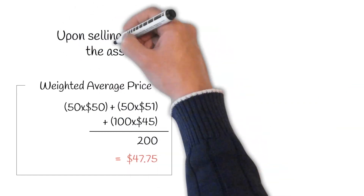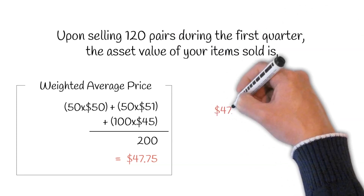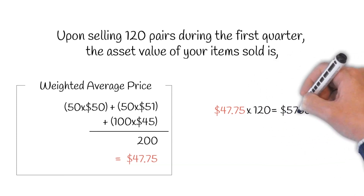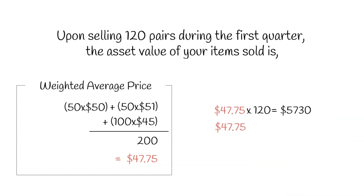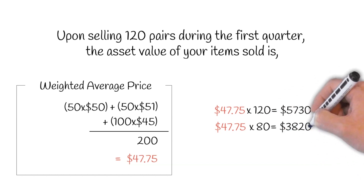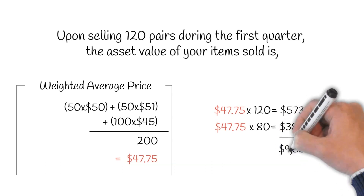Upon selling 120 pairs during the first quarter, the asset value of your items sold is $47.75 times 120, which equals $5,730. The value of your remaining inventory of 80 pairs times $47.75 is $3,820. When you add the asset values of the pairs you sold and the pairs you hold — which is $5,730 plus $3,820 — you will get an accurate total inventory asset value of $9,550.